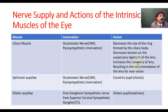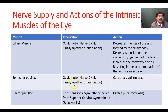So the main purpose here is accommodation and to change the convexity of the lens. Sphincter pupillae — its innervation is from the oculomotor nerve, the third cranial nerve, and this is parasympathetic innervation. Its action is constriction of the pupil — we call it miosis.